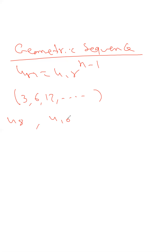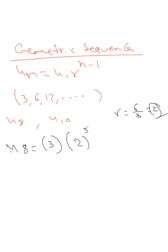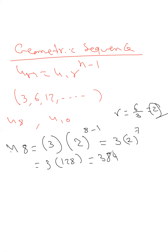Using the formula to find u_8: u_8 equals u_1, which is 3, times r, the ratio, which is 6 over 3 equals 2. So u_8 equals 3 times 2 to the power of 8 minus 1, which is 3 times 2 to the power of 7. Since 2 to the 7 equals 128, u_8 equals 3 times 128, which equals 384.